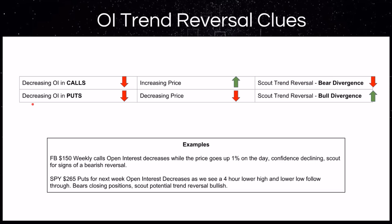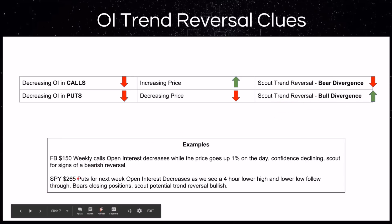The other example: decreasing open interest in puts while the price is going down. People are closing out these put contracts while the price is dropping — it shows a lack of confidence in bearish continuation. So we scout for a potential reversal with bull divergence. For SPY $265 puts for next week, if open interest is going down while we're still seeing a lower high and lower low on the four-hour timeframe, bears are closing those puts and we're going to scout for the potential of a bullish reversal.